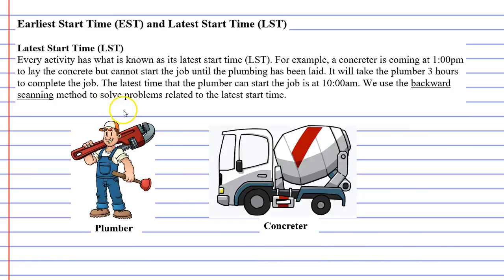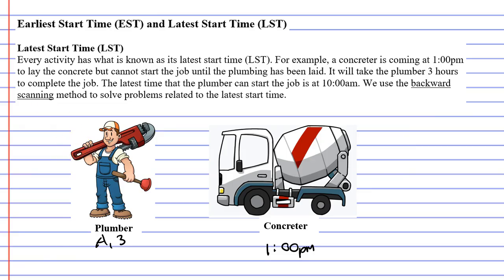Let's now move on to latest start time. Here we've got a plumber and a concreter. The concreter can't lay the concrete until the plumber has laid the plumbing. We know that the concreter is going to come at 1 o'clock, or 1 p.m. We also know that the plumber is going to take three hours to complete their job, so we'll call this activity A and give it a weight of three. The latest start time, or LST, for the plumber is going to be 10 o'clock, or 10 a.m. By starting at 10 a.m., the plumber will complete his job right on 1 p.m., just in time for the concreter to come.